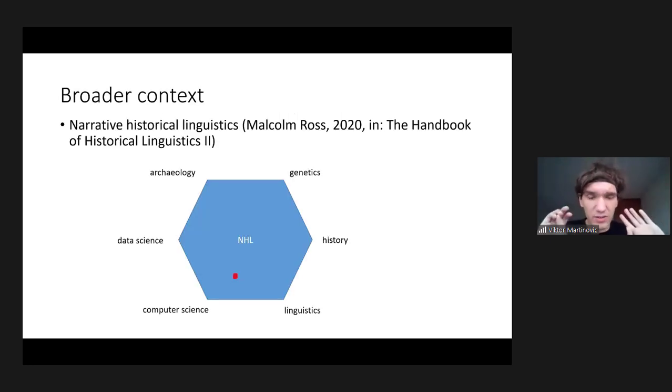Before I start, I just want to quickly illustrate the broader context of my thesis. There is this field that Malcolm Ross suggests in this handbook of historical linguistics in 2020. He calls it narrative historical linguistics. I really like the term and the concept, how he describes it. It makes a lot of sense to me. I would like to see my thesis kind of in this spirit.